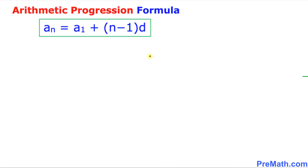Before we go any further, let's recall our arithmetic progression formula, which is a sub n equal to a1 plus n minus 1 times d. Now I am going to show you a simple proof of how we came up with this formula.